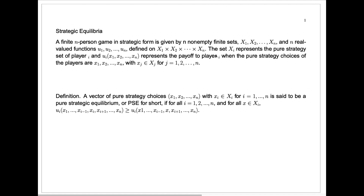It's just like a two-person general sum game, only now we have some number n of non-empty finite sets. These sets represent the pure strategies for each individual player — strategy sets x1, x2 through xn. And we need n real-valued functions u1, u2 through un defined on the product of the sets x1 times x2 up to xn.